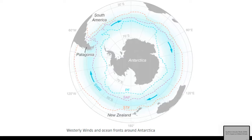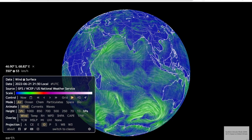To better understand SAM, here we have an image of the southern hemisphere with Antarctica in the center and the zone of westerly winds around it. During SAM, there is a north and south shift of these winds, creating a low pressure zone. This low pressure zone is highly unstable, leading to the formation of cyclones and frontal precipitation. The area where precipitation will occur mainly depends on the phase of SAM.